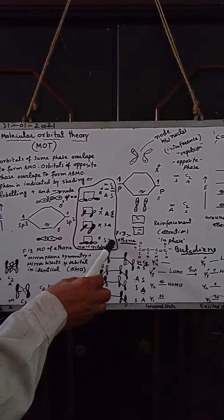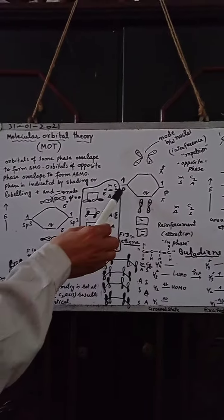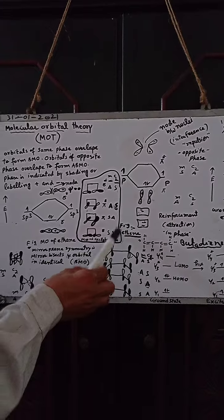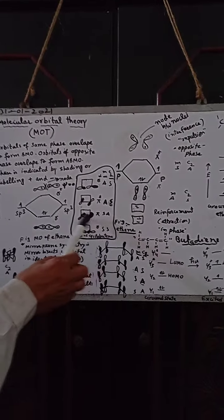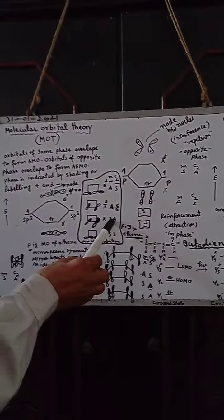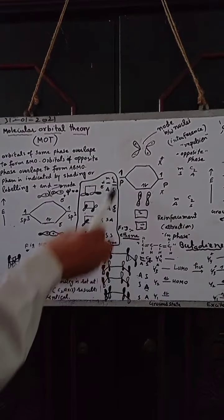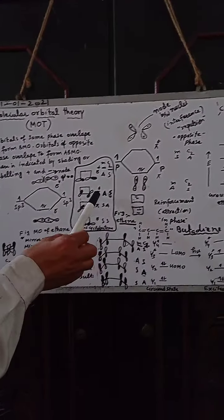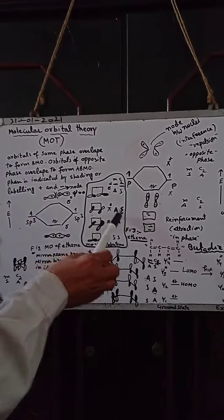The C2 proper axis of symmetry is also symmetrical. This is the pi orbital — these overlap with the same phase. Pi is mirror plane symmetrical and C2 is unsymmetrical. This is pi star.